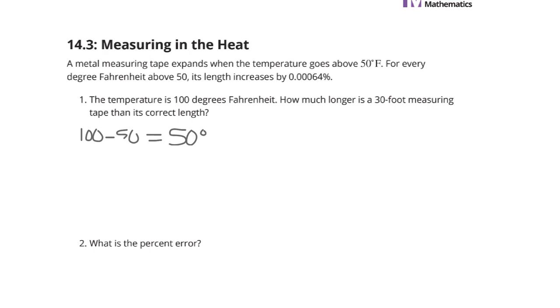And so, for every degree above 50, the length increases by that small percentage. Well, we're 50 degrees above, and it increases by that small percentage for every degree. 50 multiplied by 0.00064, and we're going to need to, since we moved this over twice, two more zeros, 6, 4, that's going to be 0.00032.